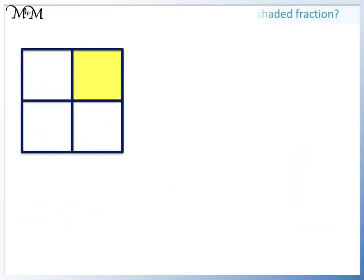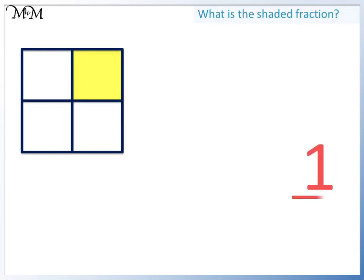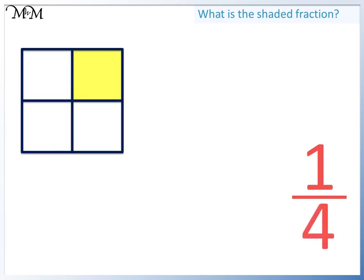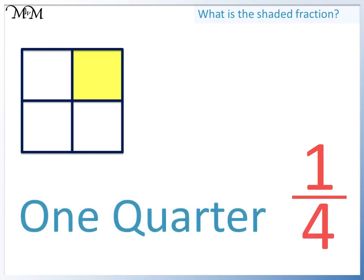What is this shaded fraction? It is one out of four equally sized parts. The fraction one out of four is called one quarter.